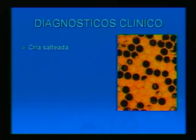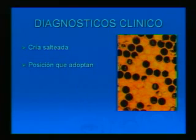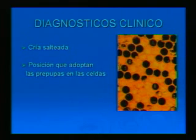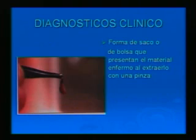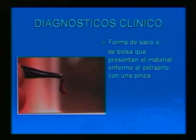El diagnóstico clínico: cría salteada, como ocurre con las principales enfermedades de la cría. Luego se diferencia por la posición que adoptan las larvas y las prepupas en las celdas. Las escamas son fáciles de extraer. El gran síntoma diagnóstico que permite diferenciarla de otras enfermedades es la forma de saco o bolsa que presenta el material enfermo al extraerlo con una pinza, como se ve en la fotografía.